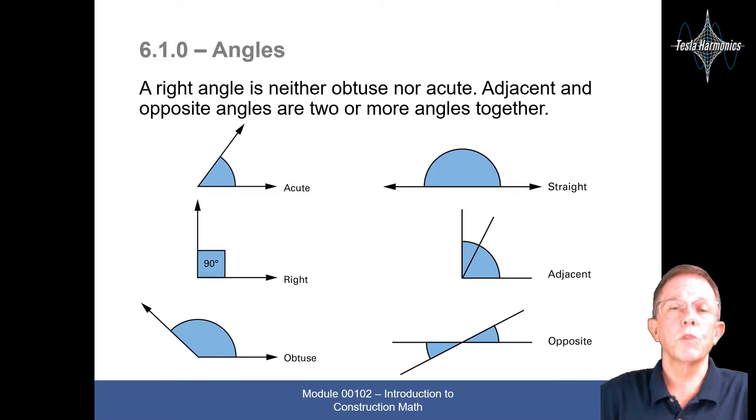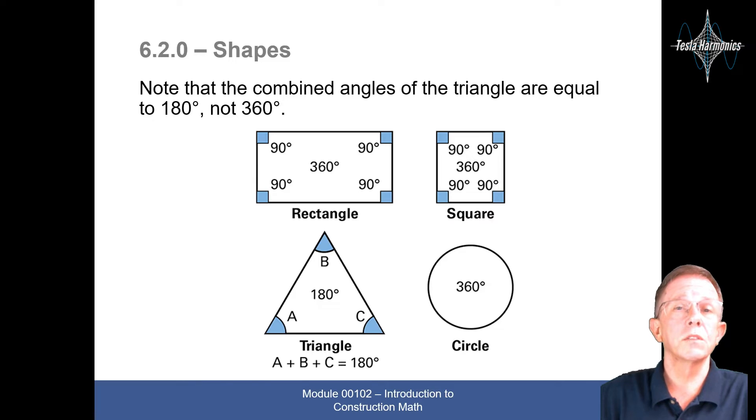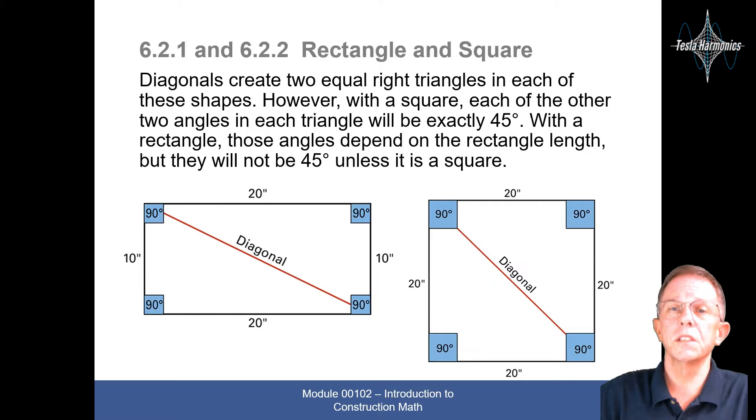Angles. A right angle is neither obtuse nor acute. Adjacent and opposite angles are two or more angles together. Note that the combined angles of the triangles are equal to 180 degrees, not 360 degrees.